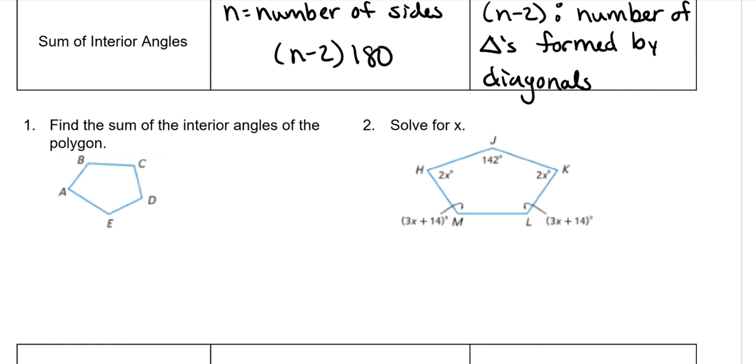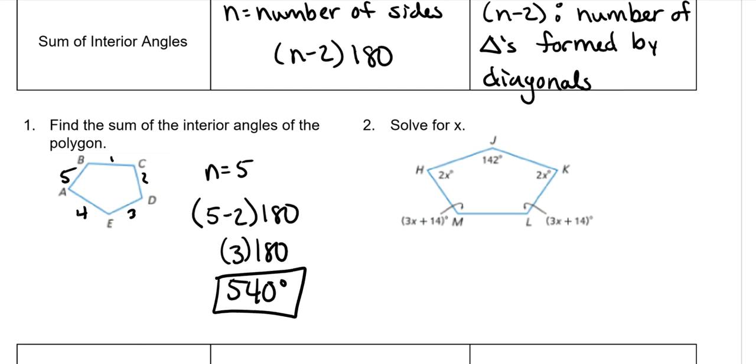Find the sum of interior angles of this pentagon. It has five sides, so n is 5. We're going to plug it in to the formula, plug 5 in for the n. So it's going to be 5 minus 2 times 180. 5 minus 2 is 3 times 180, which means all the interior angles add up together to be 540 degrees. Whenever you have a pentagon and you are given all the angles, you will add them all together and set them equal to 540.